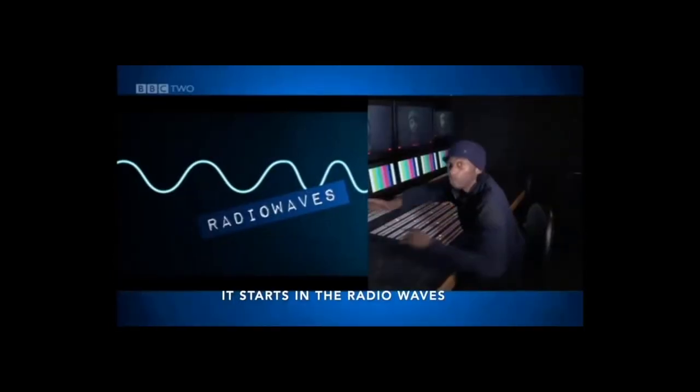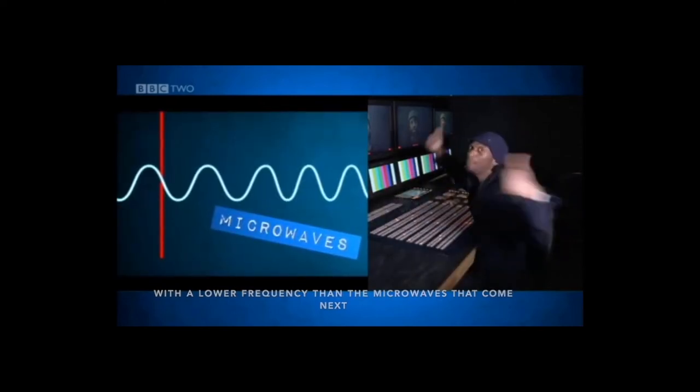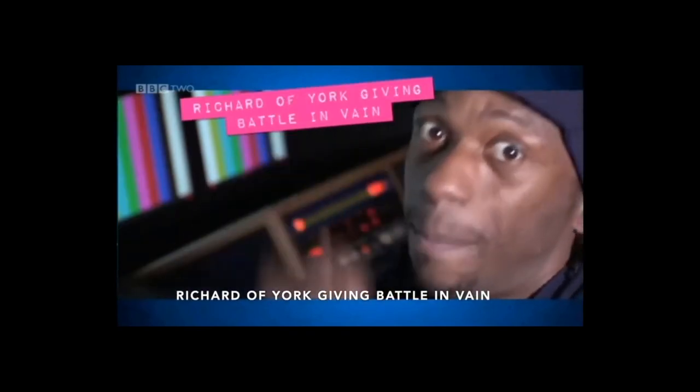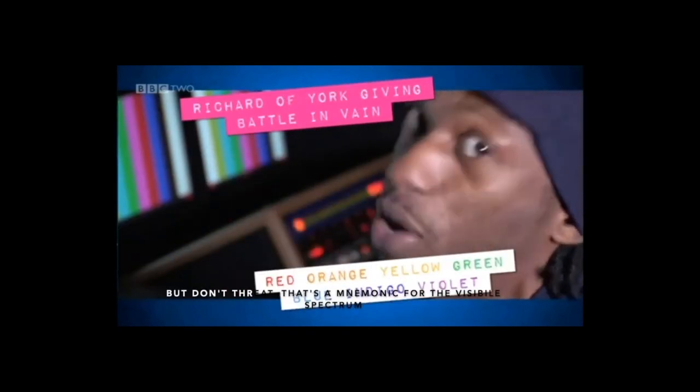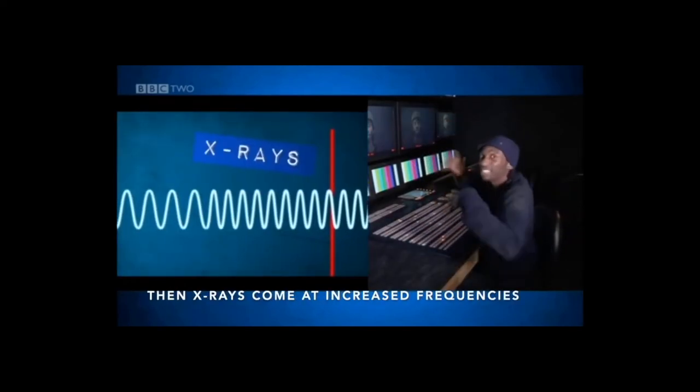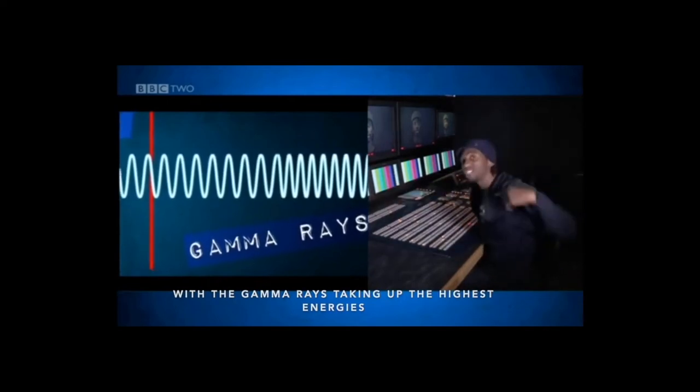It starts in the radio waves with a lower frequency than the microwaves that come next as we step over the infrared. Richard of York giving battle in vain. That's a mnemonic for the visible spectrum that blends into ultraviolet radiation. Then x-rays come and increase frequencies with the gamma rays taking up the highest energies.